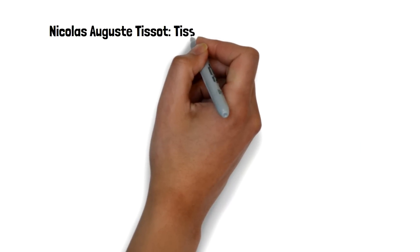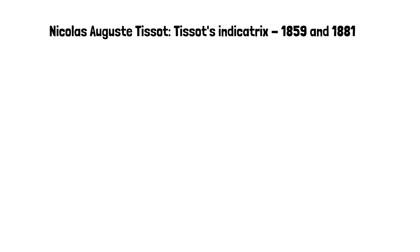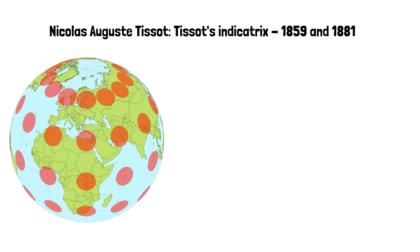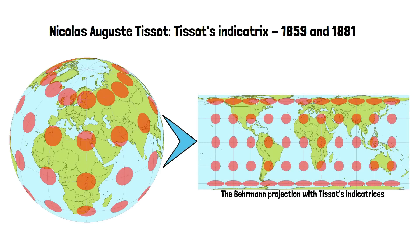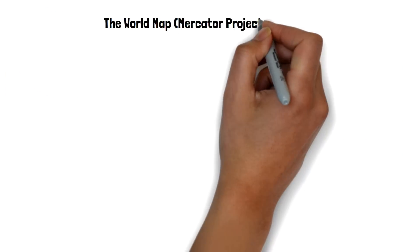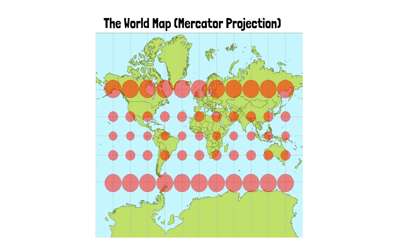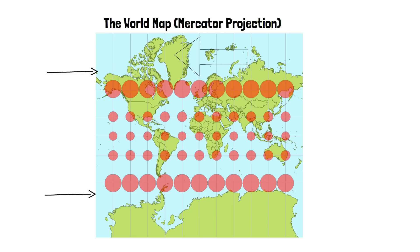An analysis of the distortions that occur on map projections was published by a French cartographer named Nicolas Auguste Tissot. He came up with the idea to put circles of the same diameter on the globe, which when projected onto a map show how and where the map is distorted. When these circles are projected onto the Mercator projection, we can see that it preserves directions and shapes of countries while distorting relative size, exaggerating the size of countries near the poles compared to areas near the equator. The size of the circles gets enlarged as they move above or below the equator and remains almost similar near the equator.